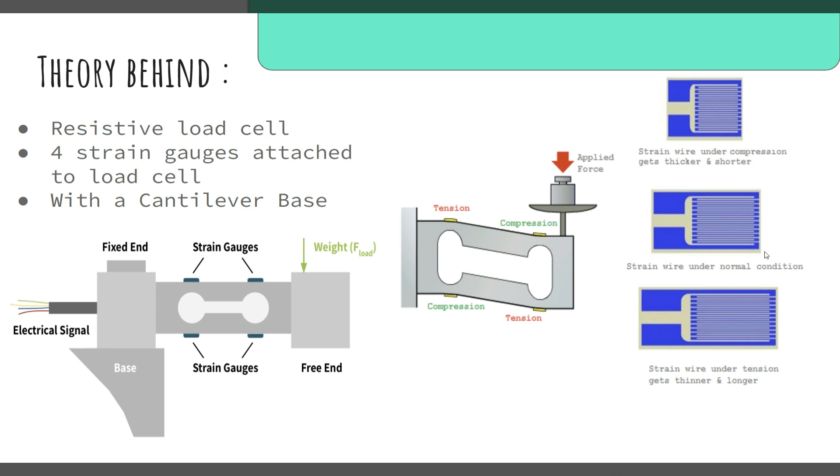When we apply force onto the cantilever base or weights under the cantilever base, there are compression and tensions created in the strain gauges attached here on our beam of load cell. Because of this tension and compression, there is a change in the length of the wire, so the area of cross section varies. Since resistance is inversely proportional to area of cross section, the resistance changes in both cases.